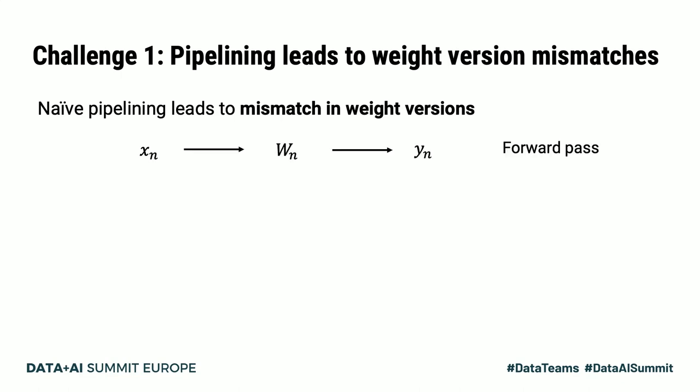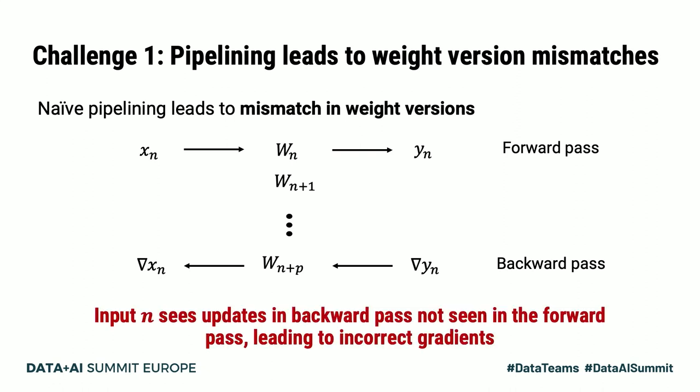Consider some input n that uses weight version w_n to produce an output activation y_n in a forward pass. If we were to use the latest version for every input and we updated weight versions whenever a backward pass completed, we would see that before we're ready to perform the backward pass for input n, the latest weight version has progressed to some new weight version w_{n+b}. Input n then sees updates in the backward pass that it didn't see in the forward pass, leading to incorrect gradient computations.